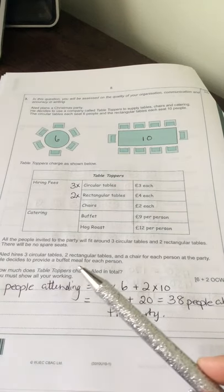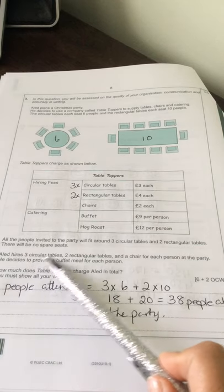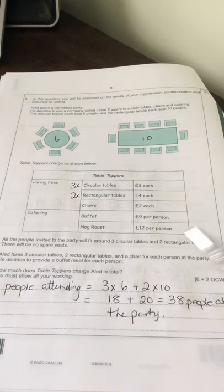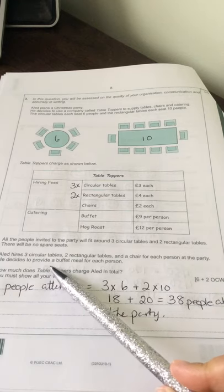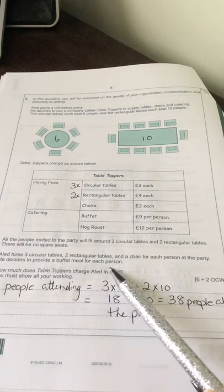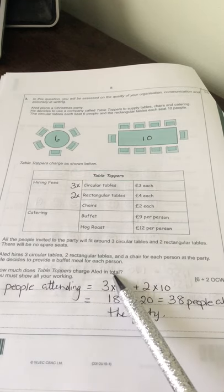The next part of the question then says, Alid hires three circular tables, two rectangular tables and chairs for each person at the party. And he decides to provide a buffet meal for each person. How much does table toppers charge Alid in total?